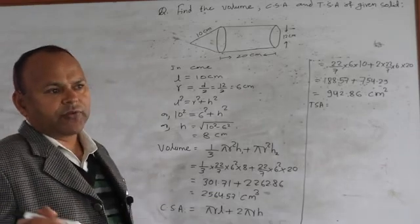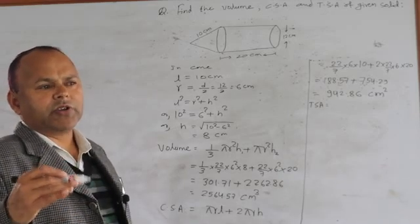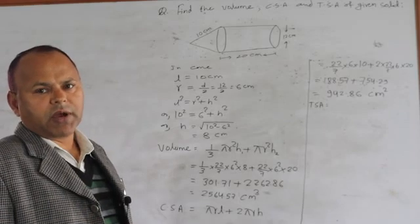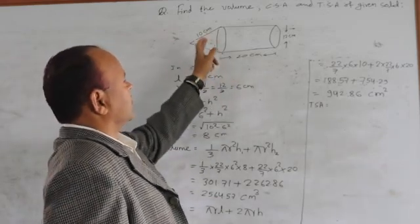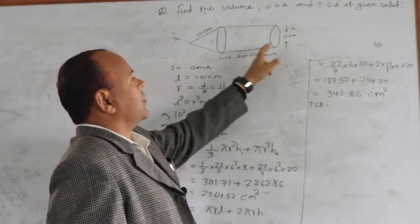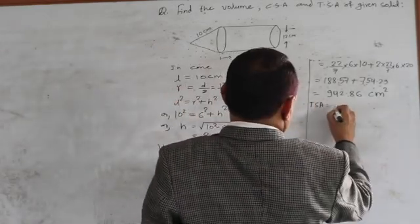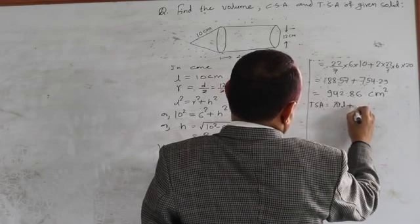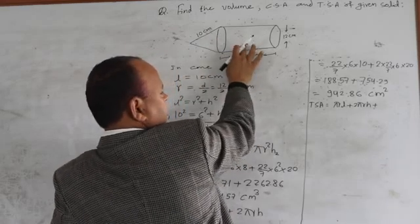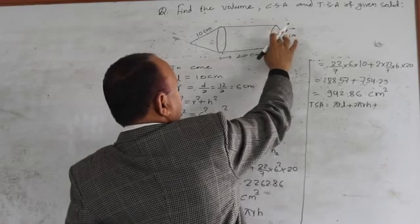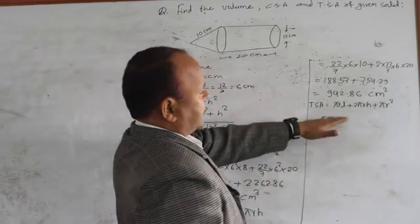Remember: total surface area of any combined object is NOT the sum of the total surface areas of the different objects used to form it. To find the total surface area: curved surface area + plane surface area. So total surface area = πrl + 2πrh + πr², combining the curved surface of the cone, curved surface of the cylinder, and the circular base.